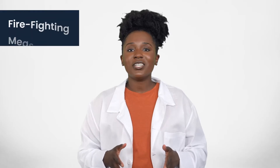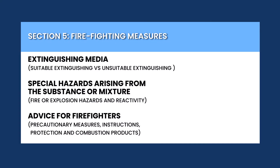Section 5 covers information for fighting a fire caused by the chemical. This includes recommendations on both suitable and unsuitable fire extinguishing equipment, advice on specific hazards that may develop during the fire, and explosion risks. This section also includes recommendations on special protective equipment or precautions for firefighters.